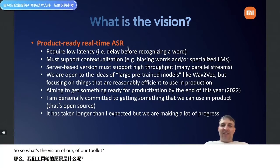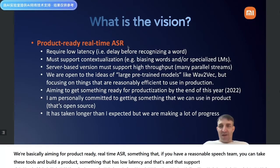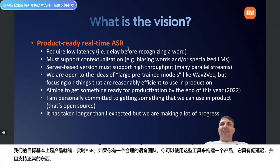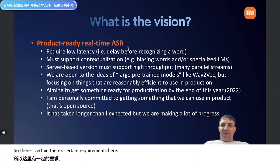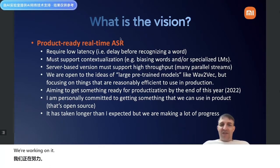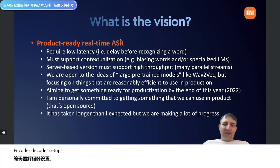Our vision for this toolkit is basically aiming for product-ready, real-time ASR — something that, if you have a reasonable speech team, you can take these tools and build a product. Something with low latency that supports normal product requirements like word biasing: for instance, if someone wants to call their friend, you need to know their contacts list. We also need to support efficient inference so the server can handle many parallel streams. We originally worked with transformer encoder-decoder setups, but abandoned that because it was too hard to have highly parallel inference, so we decided to focus on RNN-T.